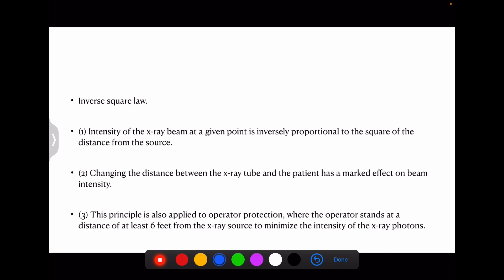Then coming to the inverse square law or distance. The intensity at a given point is inversely proportional to the square of the distance. More would be the distance, lesser would be the intensity. Changing the distance between the x-ray tube and the patient has a marked effect on the beam intensity. This principle is also applied to operator protection where the operator has to stand at a distance of at least 6 feet from the x-ray source to minimize the ray of photons. That's why we stand at 6 feet distance.